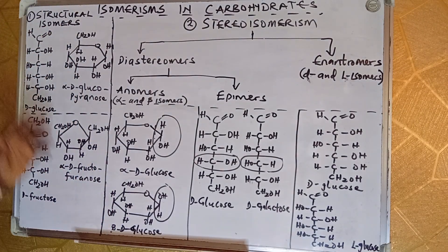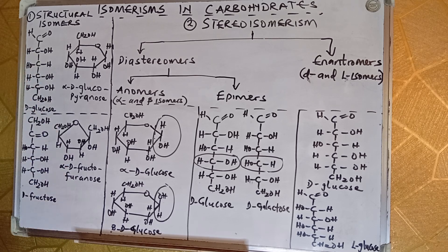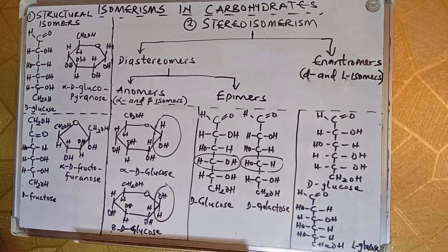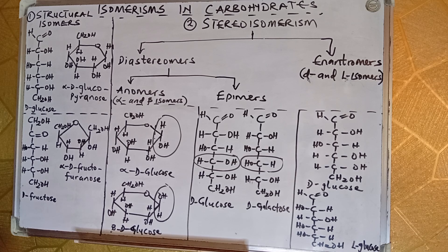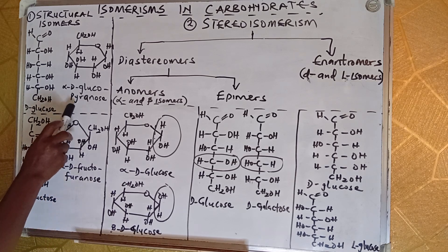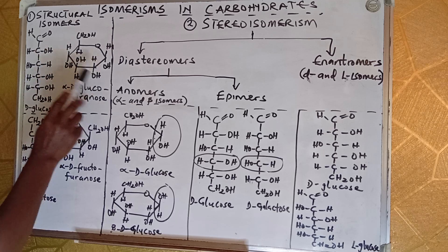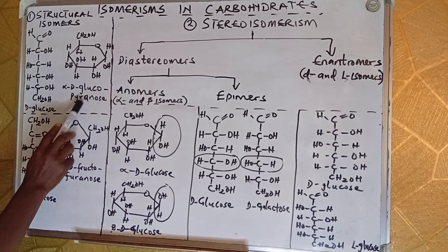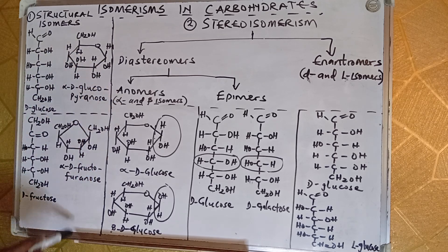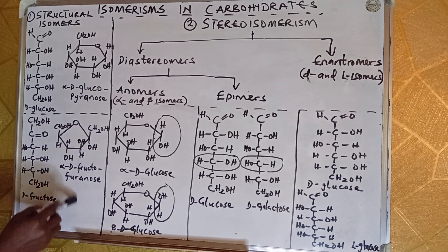Glucose is an aldohexose, which means six carbons, and contains the aldehyde group CHO. While fructose is a ketohexose sugar, six carbons, but has the ketone group at carbon 2. If you look at the structure, it is quite different. Glucose can form six-membered rings in solution, so it is a glucopyranose, while fructose can form five-membered rings in solution, so we call it fructofuranose.